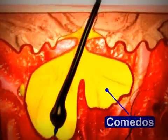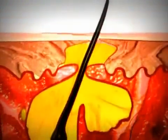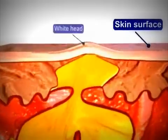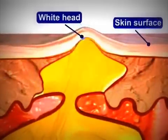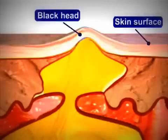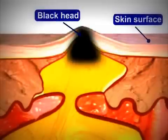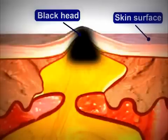There are two types of comedo: whiteheads and blackheads. When the sebum and bacteria stay below the skin surface, a whitehead is formed. A blackhead occurs when the trapped sebum and bacteria partially open to the surface and turn black due to melanin, the skin's pigment.